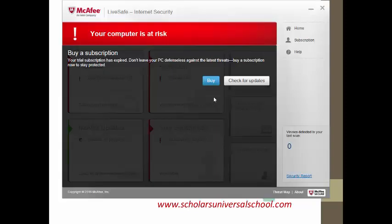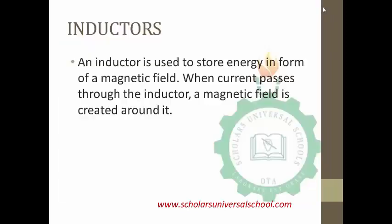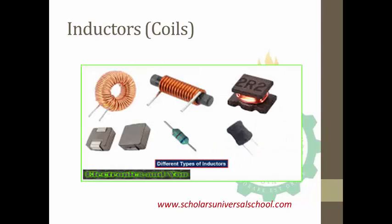The next device we will be talking about is the inductor. An inductor is used to store energy in the form of a magnetic field. It does not store in the form of electricity — it stores in the form of a magnetic field. When current passes through the inductor, a magnetic field is created around it; that is, it has converted the electric current into a magnetic field. The picture of the inductor in front of us shows a coil, and it stores a magnetic field when electrical current is passed through it.